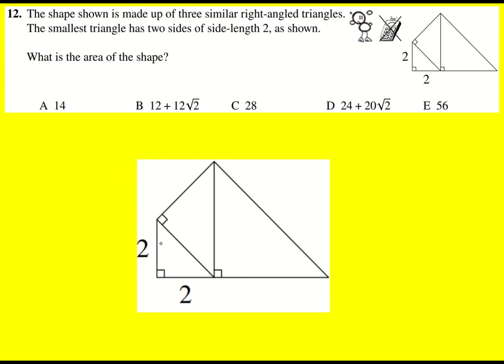So actually I immediately see that this first triangle on the left is going to be a half times 2 times 2, so the area is going to be 2.